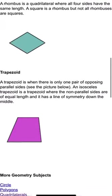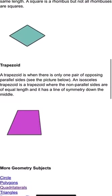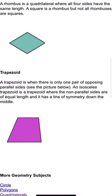A trapezoid is when there's only one pair of opposing parallel sides. An isosceles trapezoid is a trapezoid where the non-parallel sides are of equal length and has a line of symmetry down the middle.